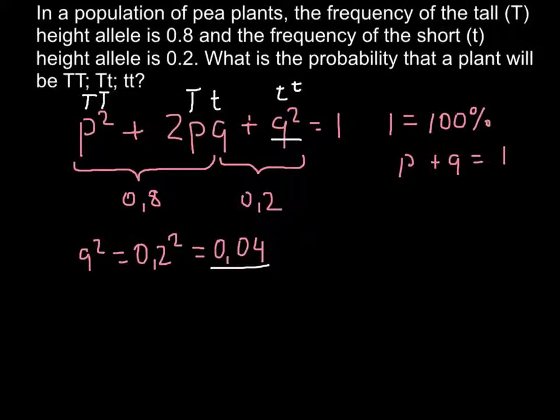Now we know the frequency of q squared. Now we can find the frequency of p squared. We just have to square the frequency that is 0.8. And the answer would be 0.64. So, now we know the frequency of p squared, or homozygous dominant.